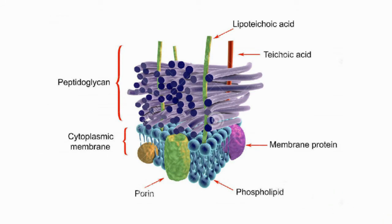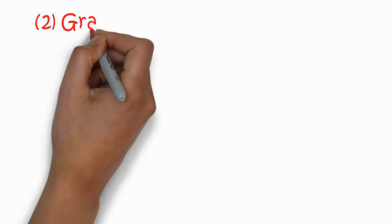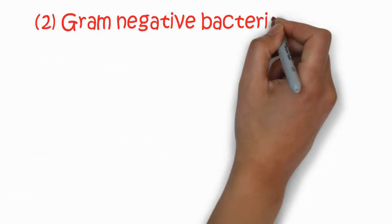In this picture, you can see the lower layer is the cytoplasmic membrane: porins, proteins, phospholipids, membrane proteins, and the filamentous layers of the cell wall. And there are teichoic acid and lipoteichoic acid which are moving upward.